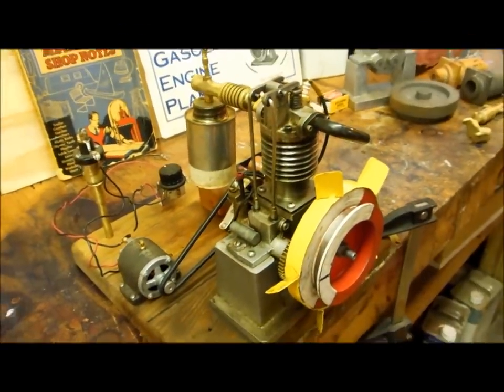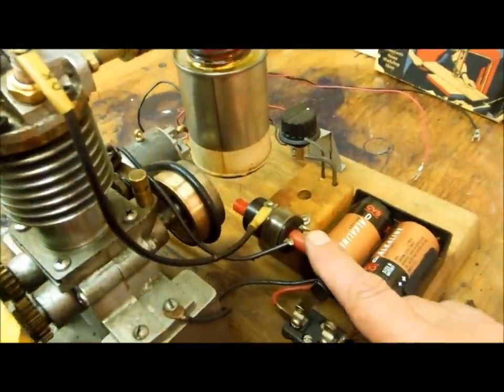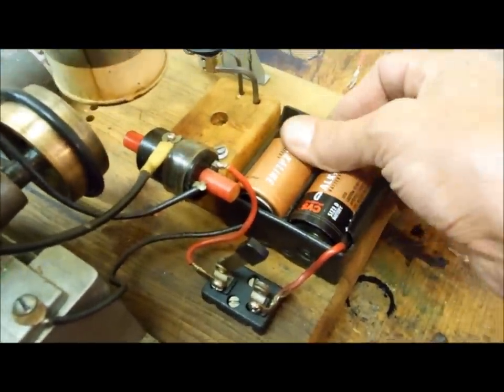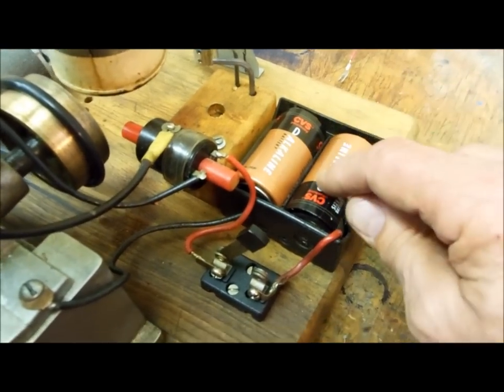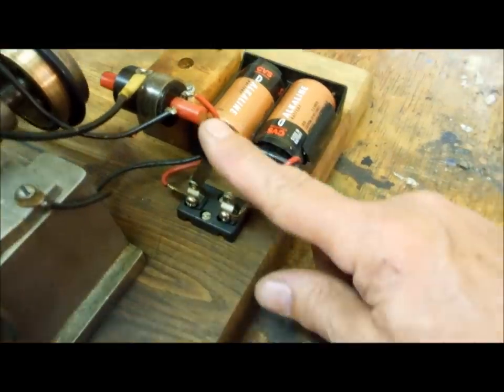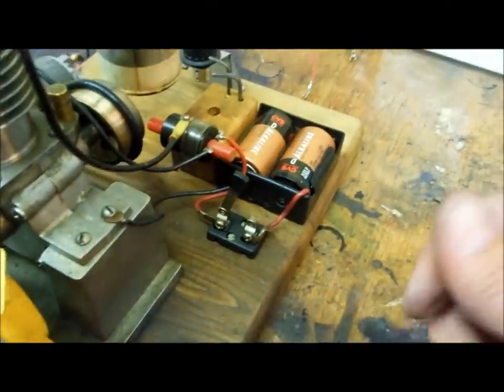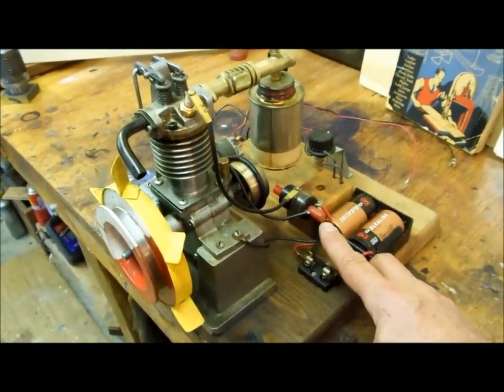It has a three-volt model electric coil for model airplanes. Two D-cells, volt and a half each, gives you three volts. Then there's a little knife switch. This will usually start on the third try when I do it by hand, but if it won't start by hand I'll get out the magic drill.